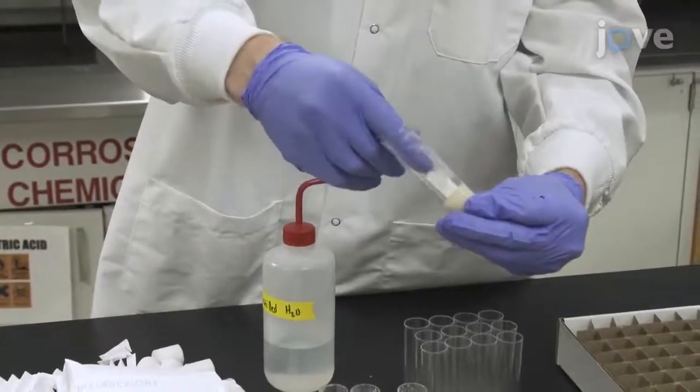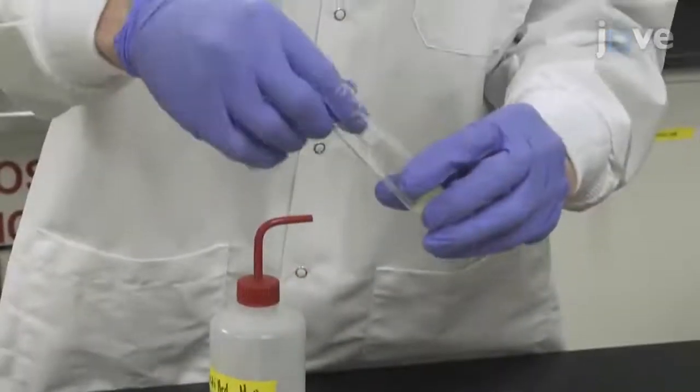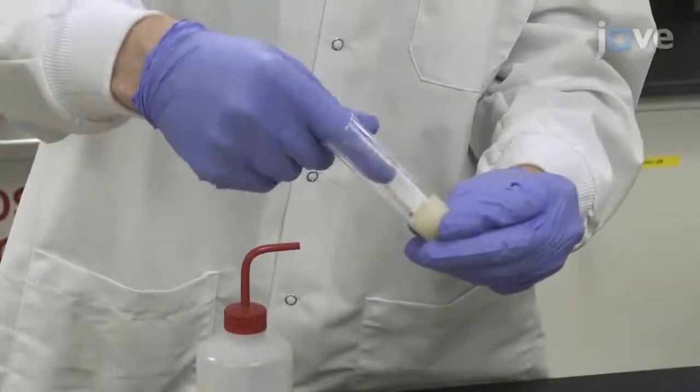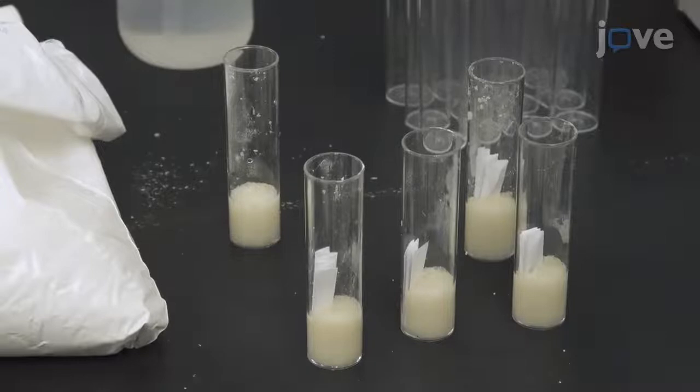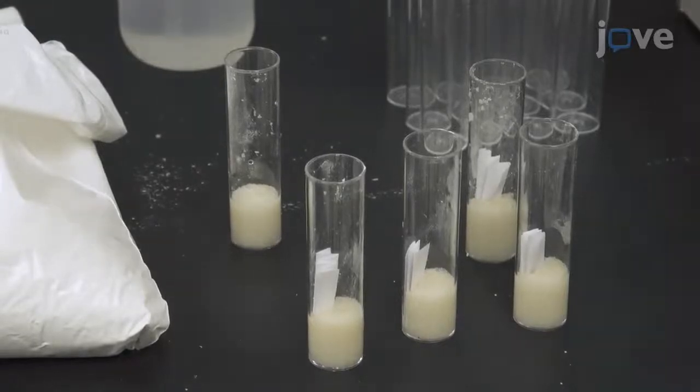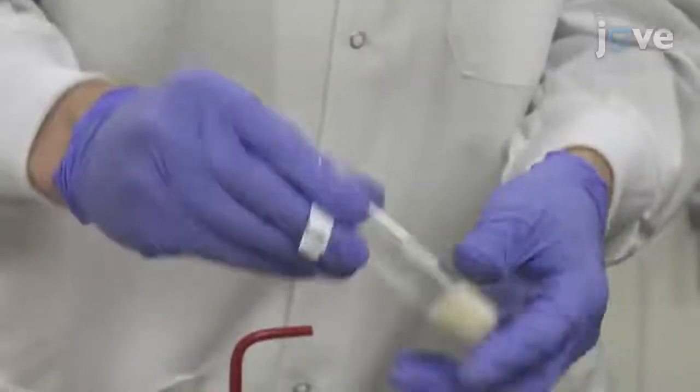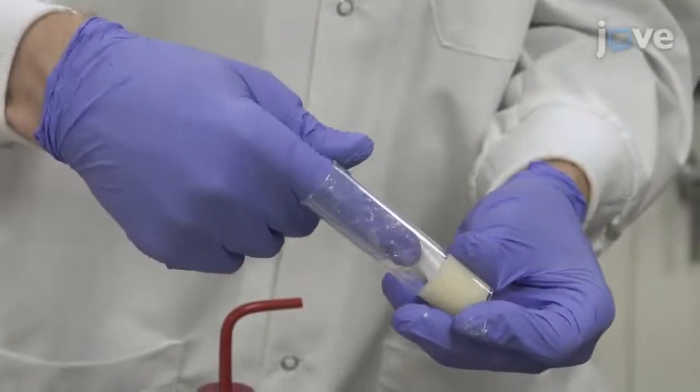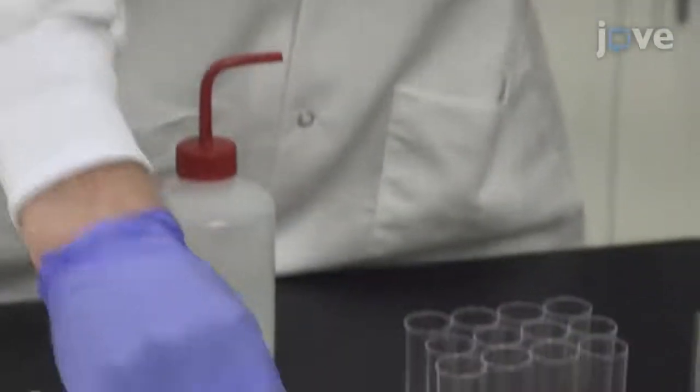Next, prepare the growth medium with the compound at the desired concentration. For instance, add the compound in the water aliquot when making instant medium. In parallel, make control medium without the added compound.